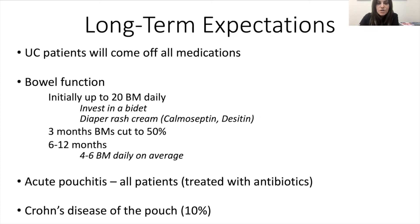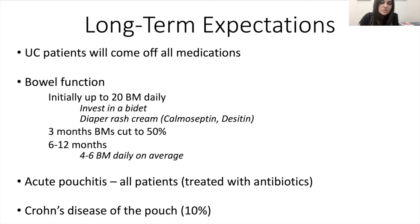Long-term expectations of the J-pouch: all patients with ulcerative colitis will come off their medical therapy completely. Bowel function can be up to 20 a day initially, so I usually tell patients to invest in a bidet or washlet to help with washing rather than using wet wipes and toilet paper. Your bum will get pretty raw in that initial post-op period — invest in some diaper rash cream. Usually at about three months patients will cut down by about 50%, and by six to twelve months patients can expect four to six bowel movements a day.